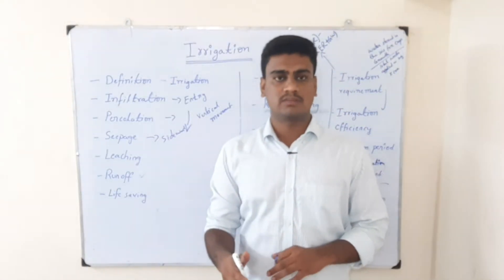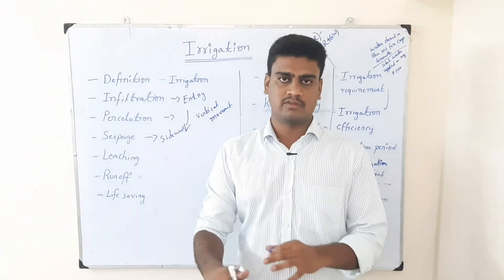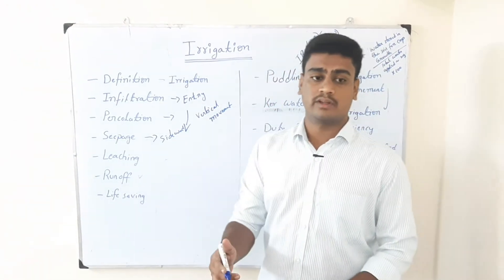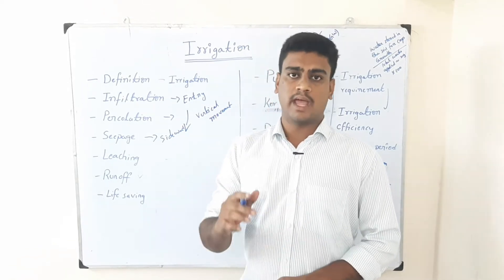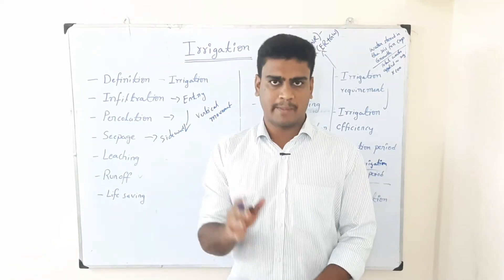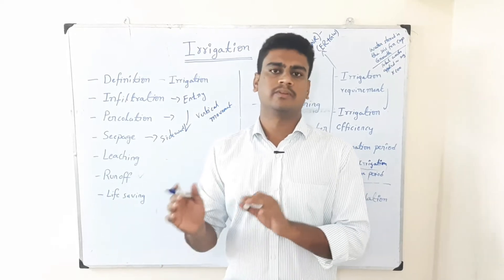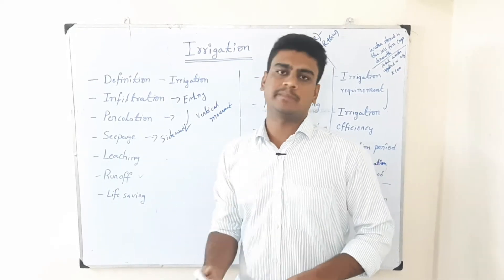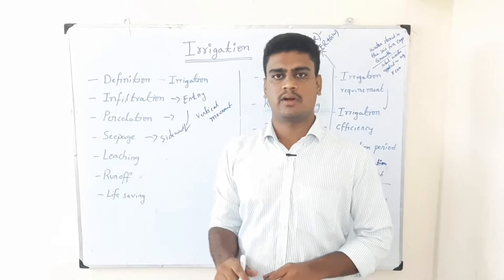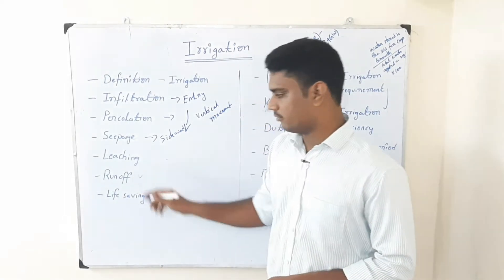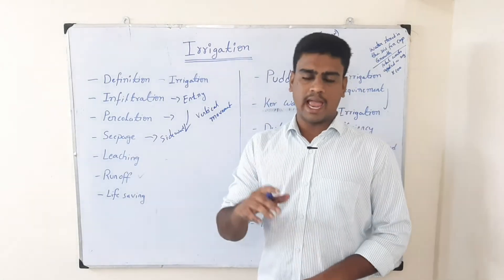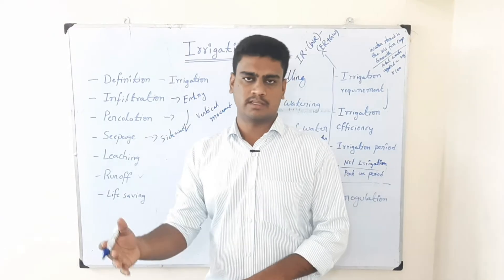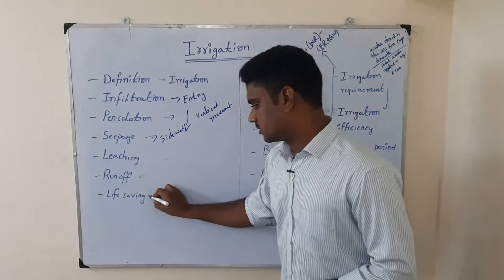The next term is runoff. Runoff is nothing but the excess water which is moving away from the soil surface from one place to another. When soil reaches the saturation point, all macro pores and micro pores are filled by water and the soil cannot accept any more water — that is the saturated point. At that point, runoff takes place. So the excess movement of water from the topmost layer from one place to another is called runoff.